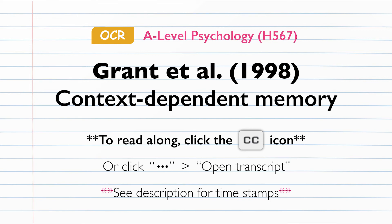Conclusions. The results provided further evidence that context-dependent memory exists for newly learned information. The researchers suggested that an implication for students is that, because real-life tests in academic settings are usually conducted in a quiet environment, they are more likely to perform better on exams if they study with minimum background noise. Furthermore, the fact that evidence for context-dependent memory was found regardless of whether a short answer test or multiple choice test was used suggests that the phenomenon can occur with different types of testing and examination.